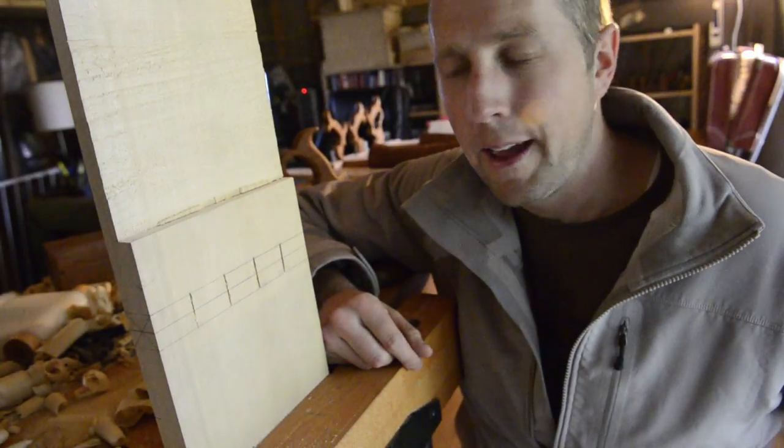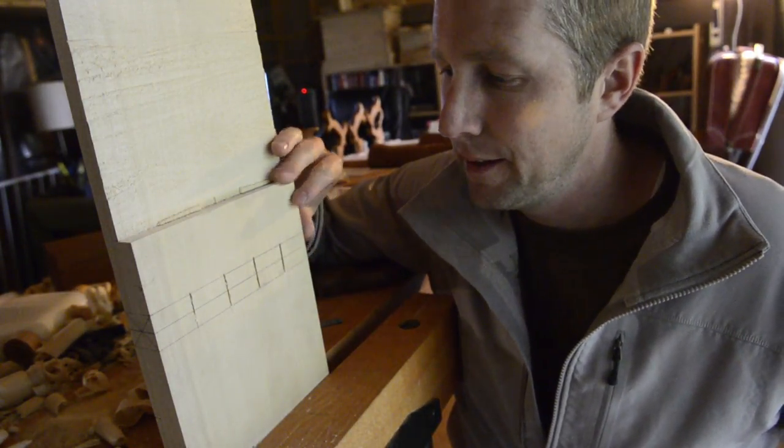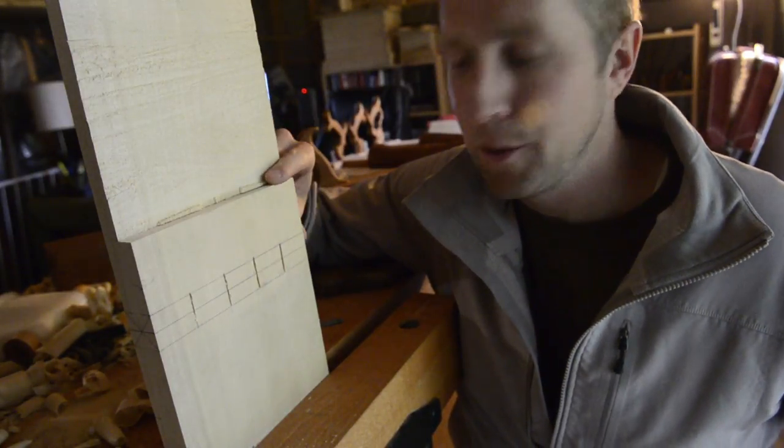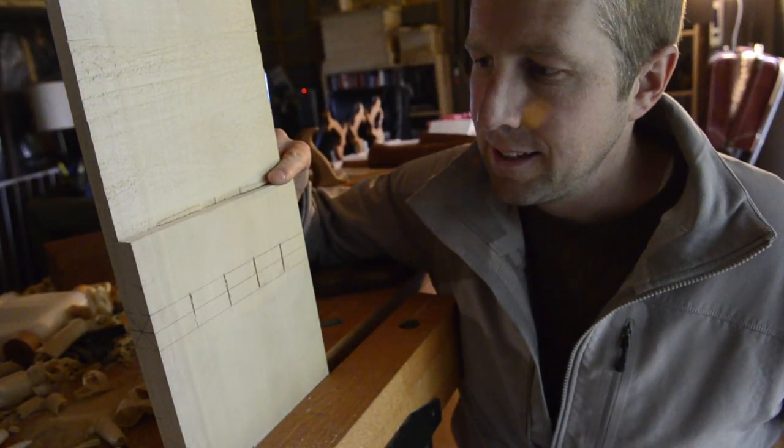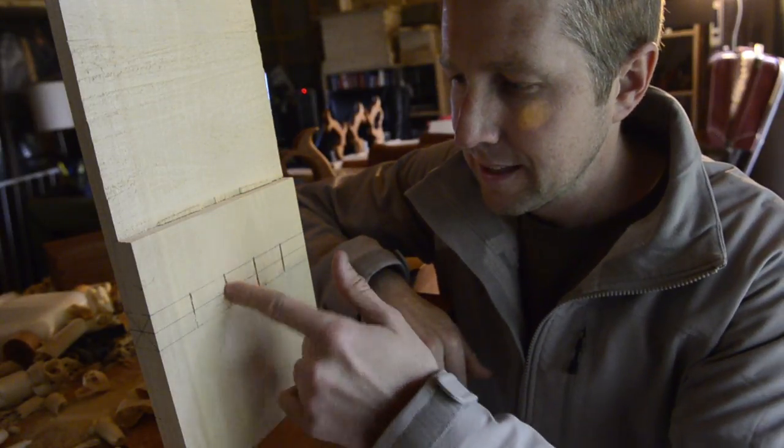I am Joshua Farnsworth and I am building a Rubo bookstand, one that Roy Underhill showed on one of his episodes a few years ago. I ran into a problem when trying to cut these little slots in here.